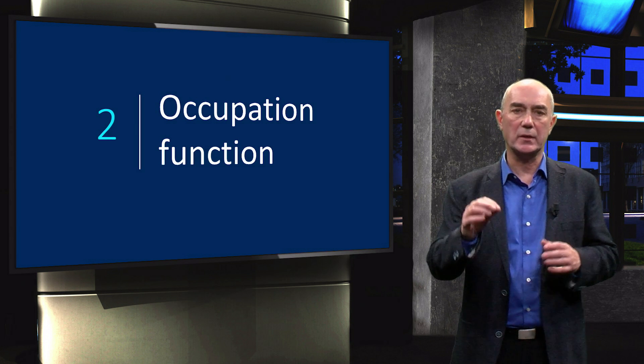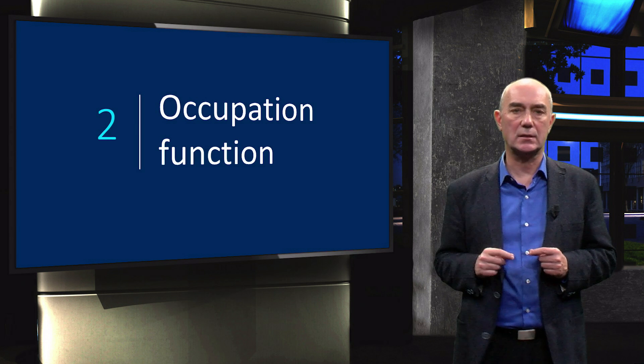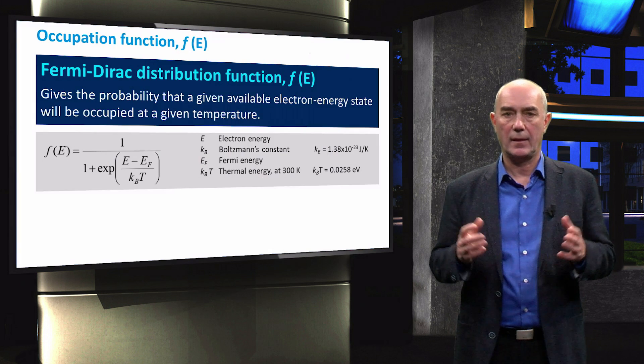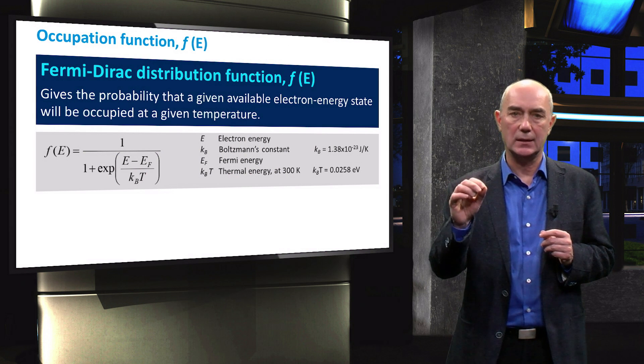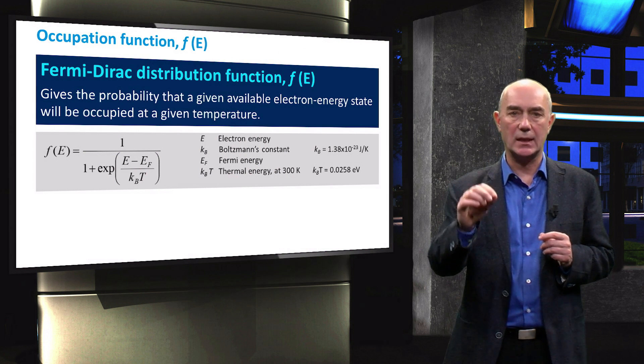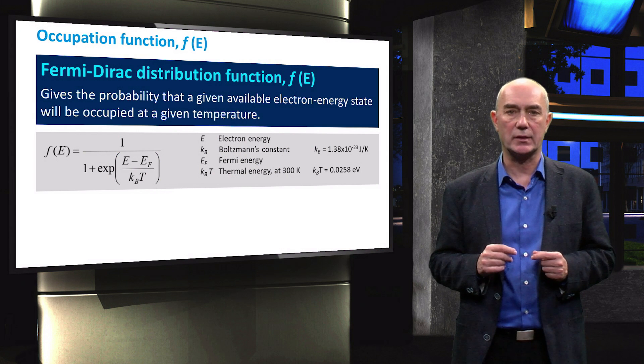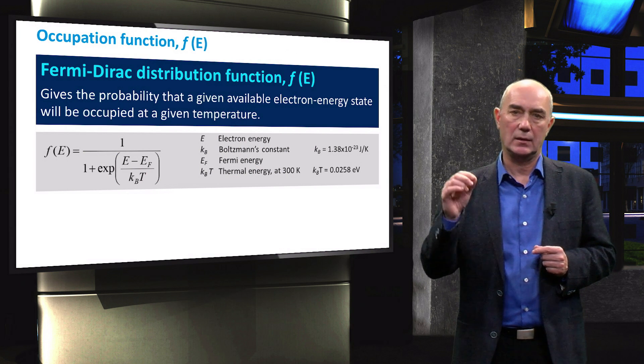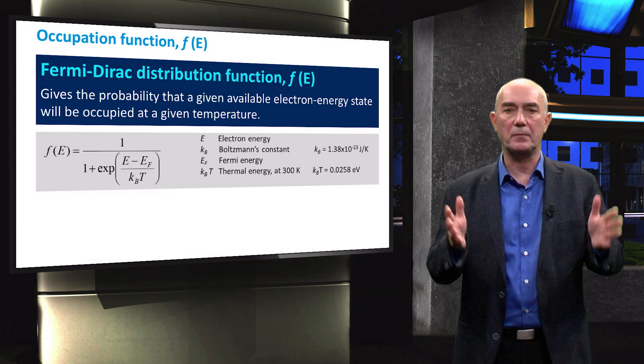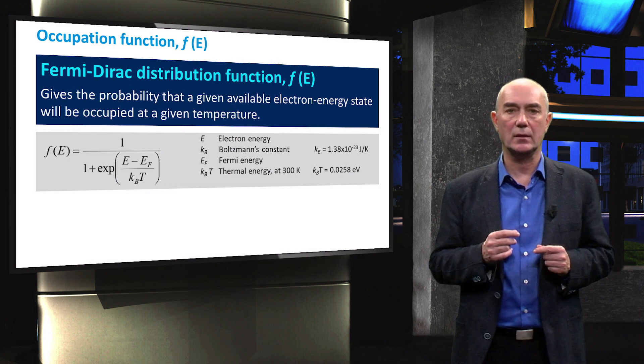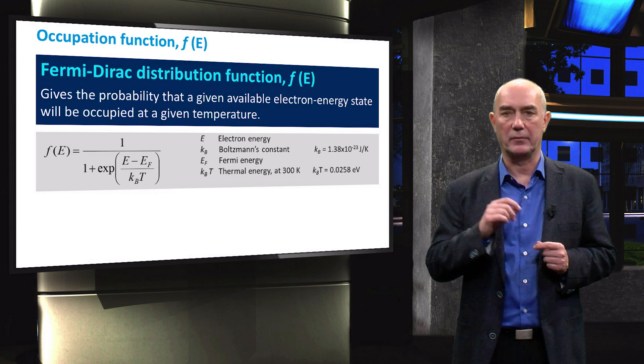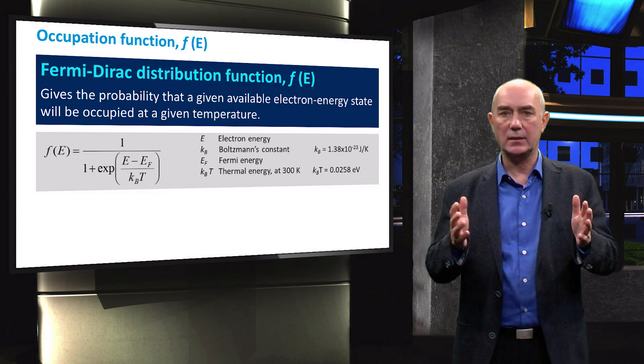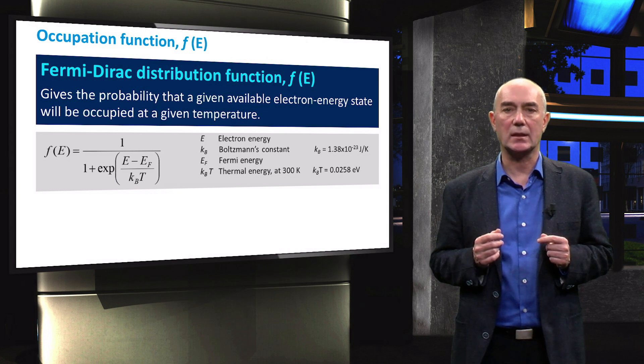This function is known as the Fermi-Dirac distribution function. The Fermi-Dirac distribution function expresses the probability that an available energy state will be occupied at a certain temperature. This function depends on the difference between the energy level of interest and the so-called Fermi level. I will explain the definition of the Fermi level in a couple of slides.